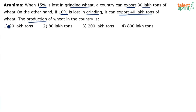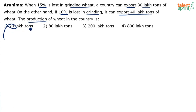Clearly, option 1 is eliminated. When they can export 30 lakhs, how can we say total production is only 20 lakhs? Total production should be more than the export. So when the export is 30, how can the total be 20? 20 is wrong. It can be 80, 200, or 800 — all these are more than 30.